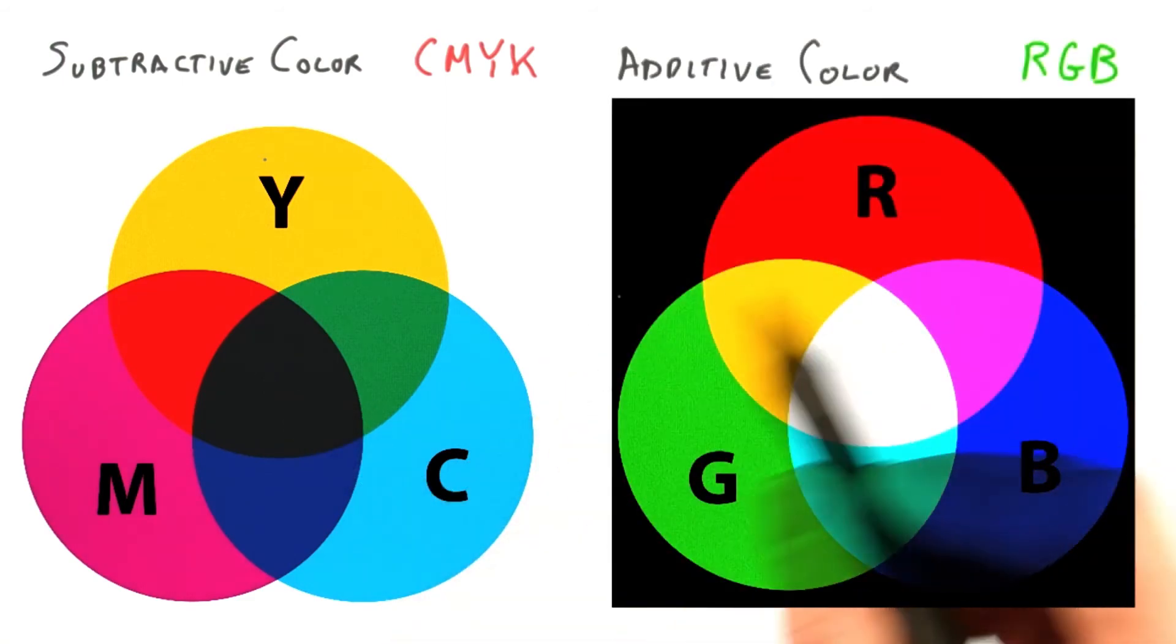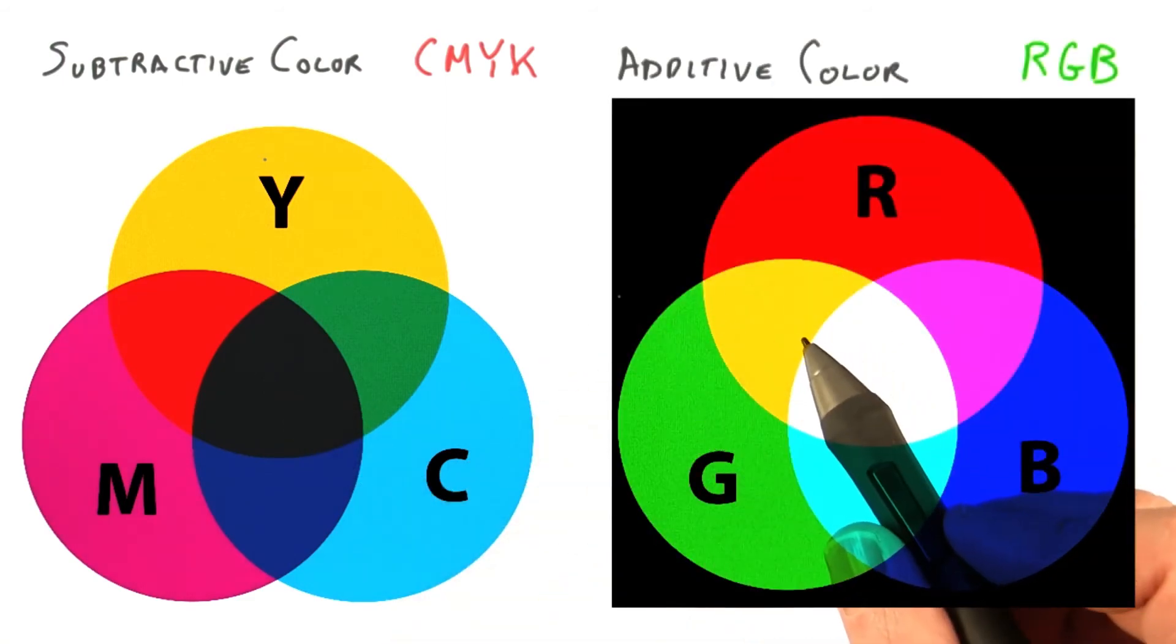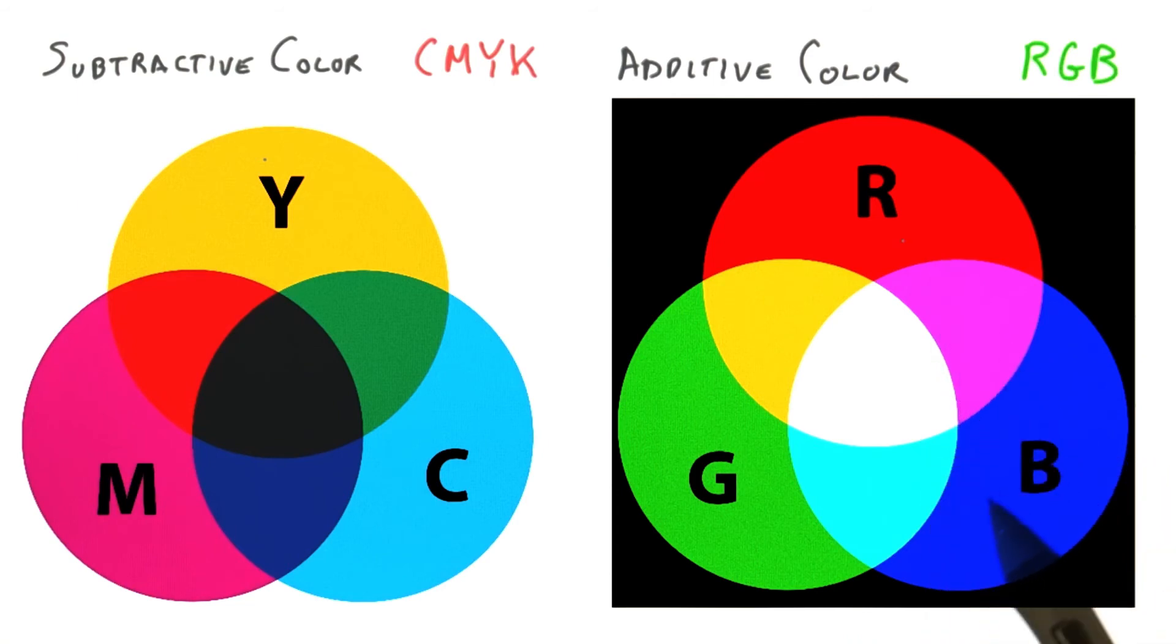In computer graphics, a monitor, such as this one, emits light of different wavelengths. Our eyes see light in wavelengths between 390 and 750 nanometers. Longer wavelength light is red, shorter is blue, with the rainbow in between.